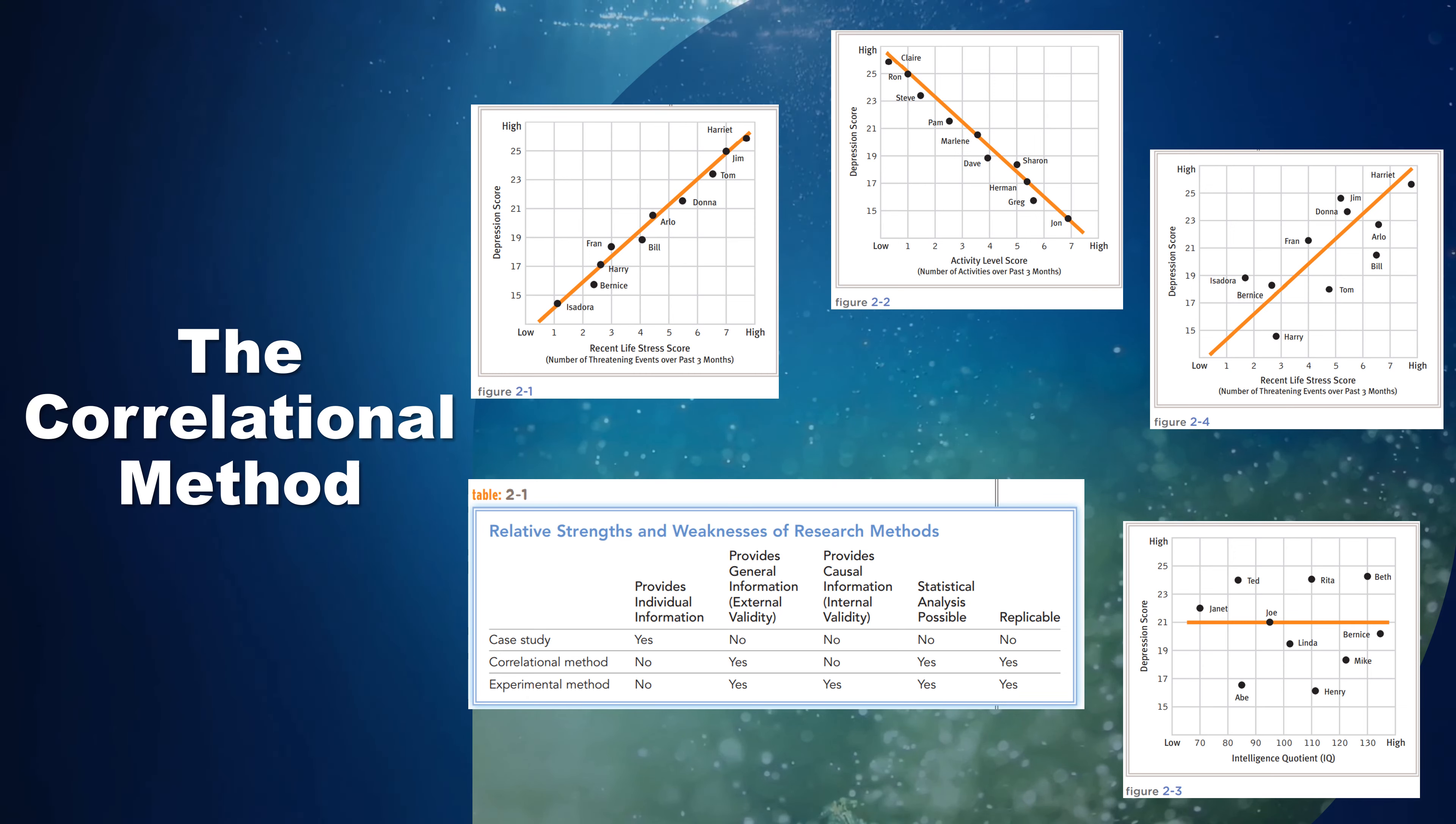In longitudinal studies, also called high-risk or developmental studies, correlational studies of another kind, researchers observe the same individuals on many occasions over a long period of time. In several such studies, investigators have observed the progress over the years of normally functioning children whose mothers or fathers suffered from schizophrenia. The researchers have found, among other things, that the children of the parents with the most severe cases of schizophrenia were particularly likely to develop a psychological disorder and to commit crimes at later points in their development.